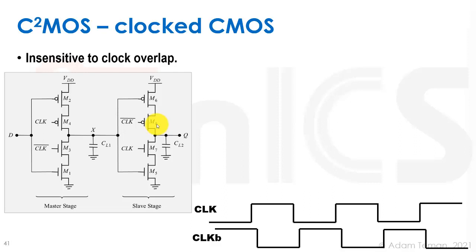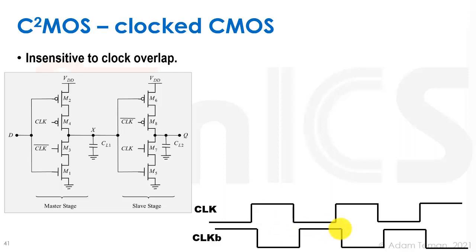Several flip-flop designs try to solve this problem, and the most well-known one is called C2MOS, or clocked CMOS. Clocked CMOS, C2MOS, is insensitive to clock overlap. Down here we have the waveforms of these overlapping clocks, and here we have the implementation of the C2MOS type of flip-flop. What we can basically see here is that we just used a tri-state buffer instead of a standard inverter on the C2MOS path.